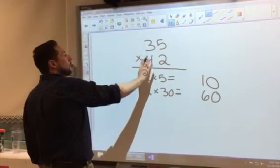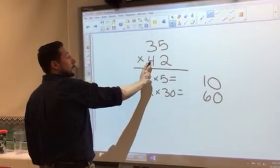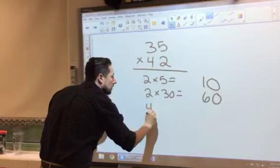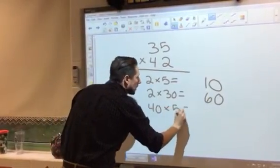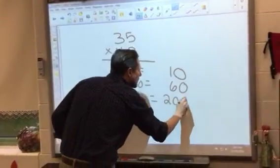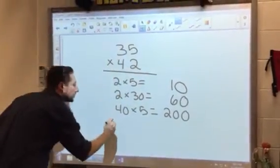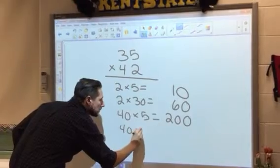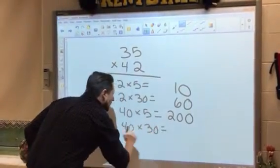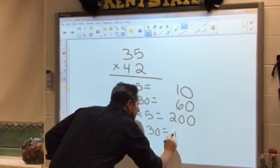Now I'm going to do 40. That's a 40. 40 times 5, and that's 200. Then I'm going to do 40 times 30, and that is 1,200.